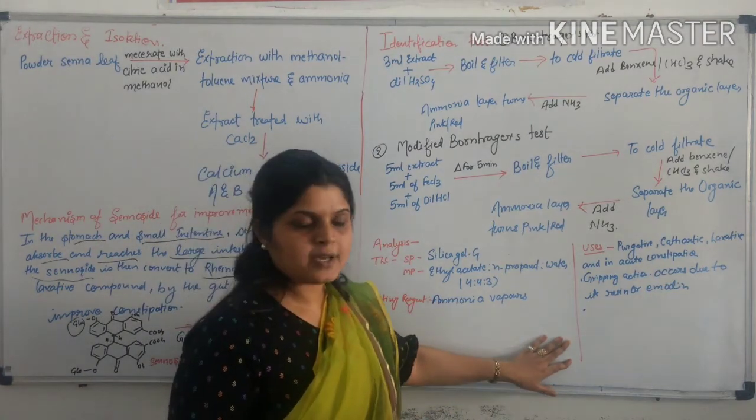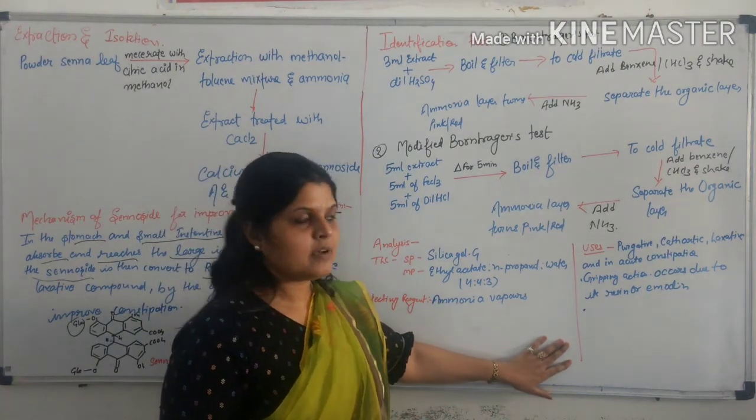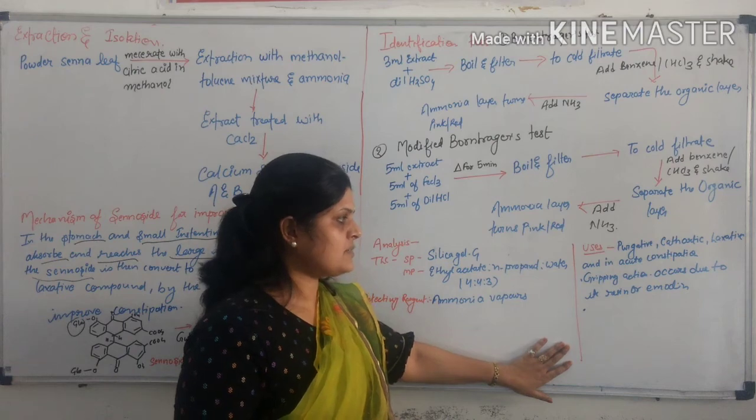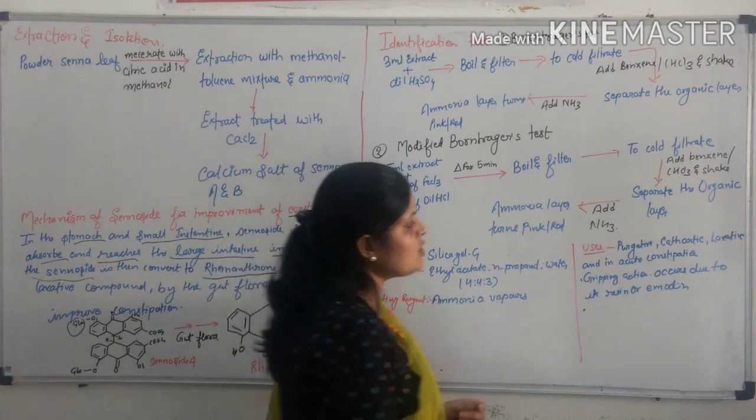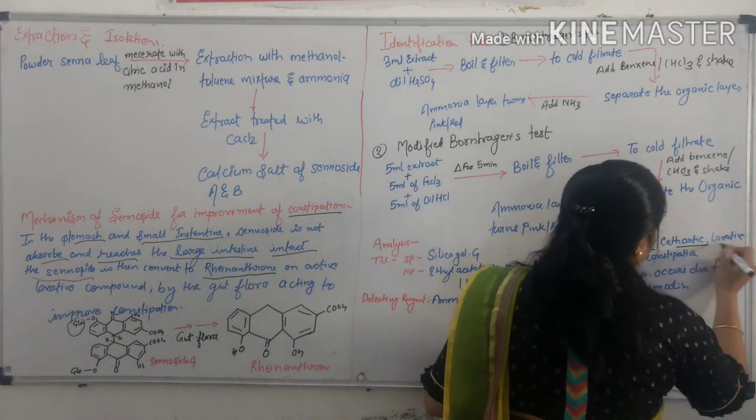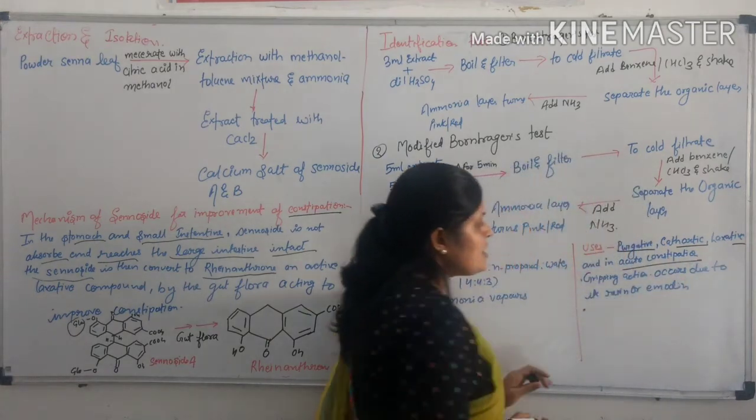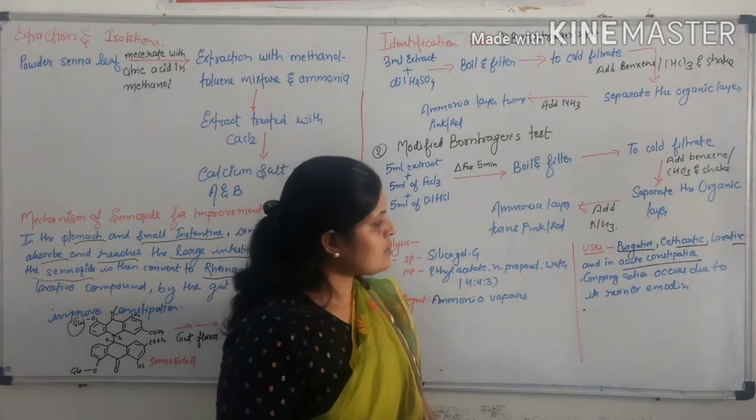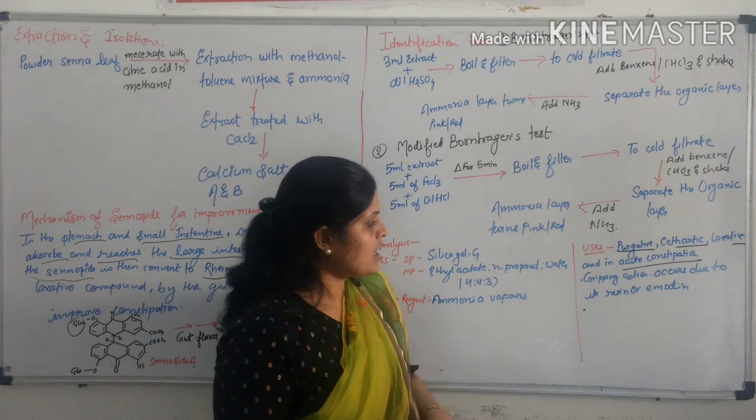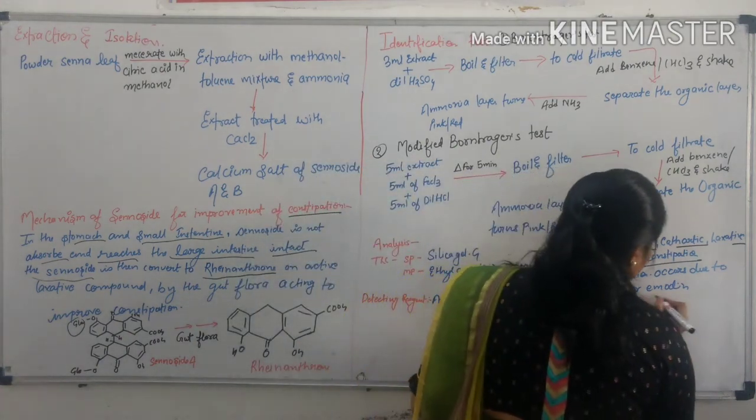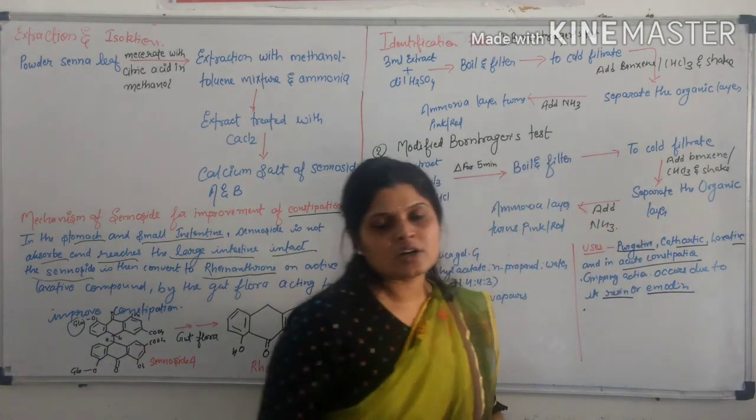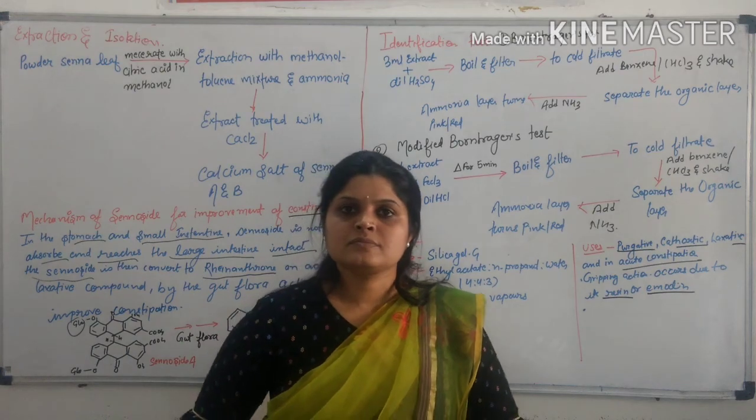Uses of Senna: It is used as a purgative, cathartic and laxative, and in acute constipation. Griping action is occurred due to essential oil. Resin and promoted constipation. Thank you.